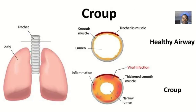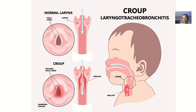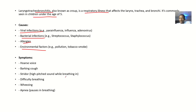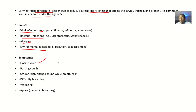If the larynx and trachea are affected, that's croup. The patient will have hoarseness of voice because of involvement of the larynx. The larynx is the voice box — it is the reason we are able to speak with a particular voice.